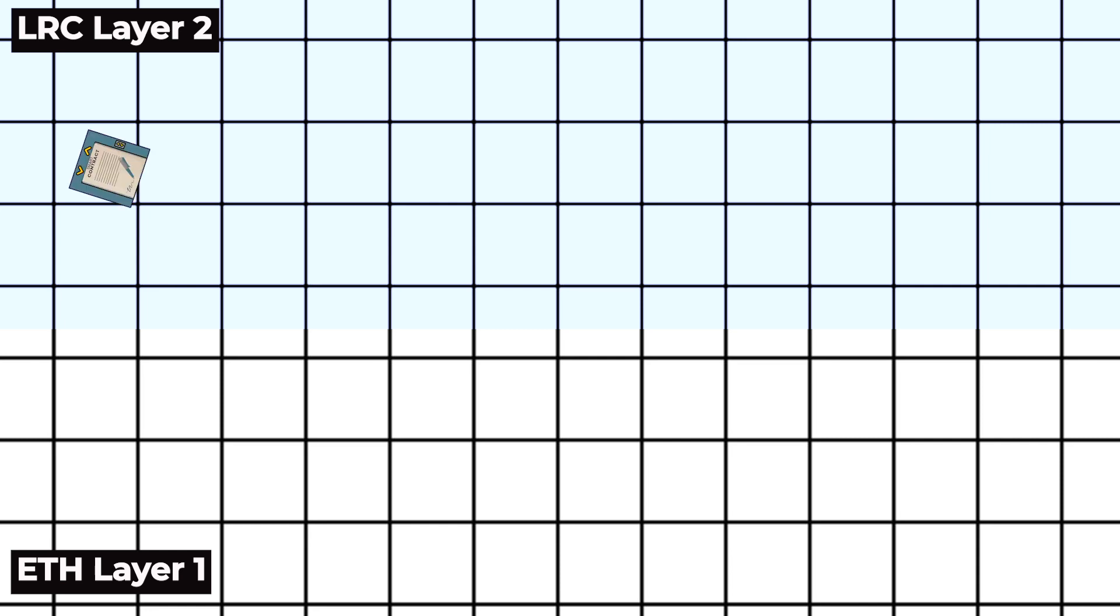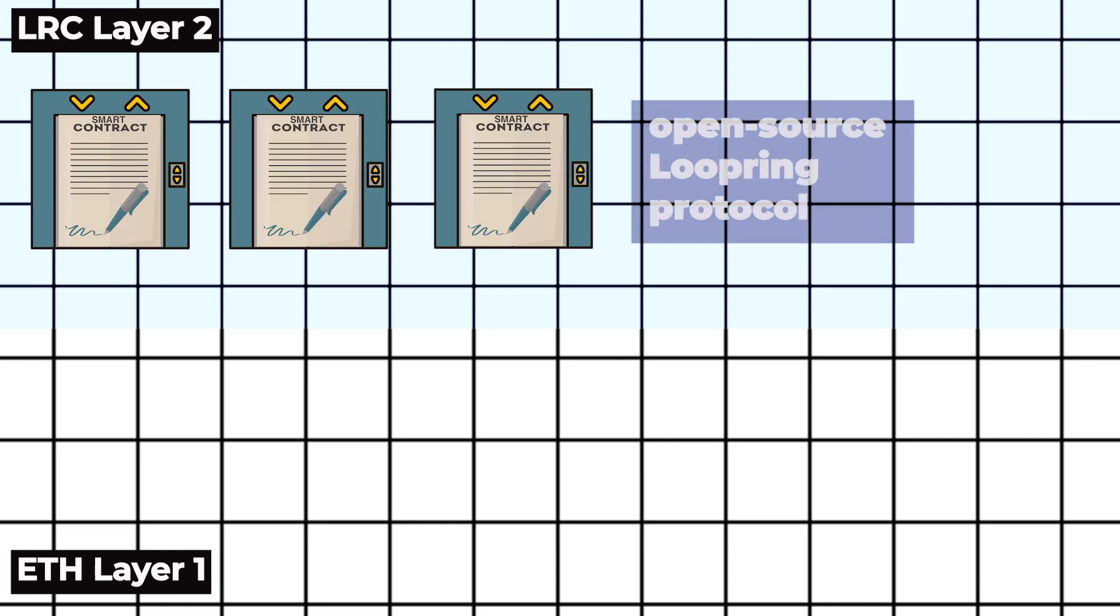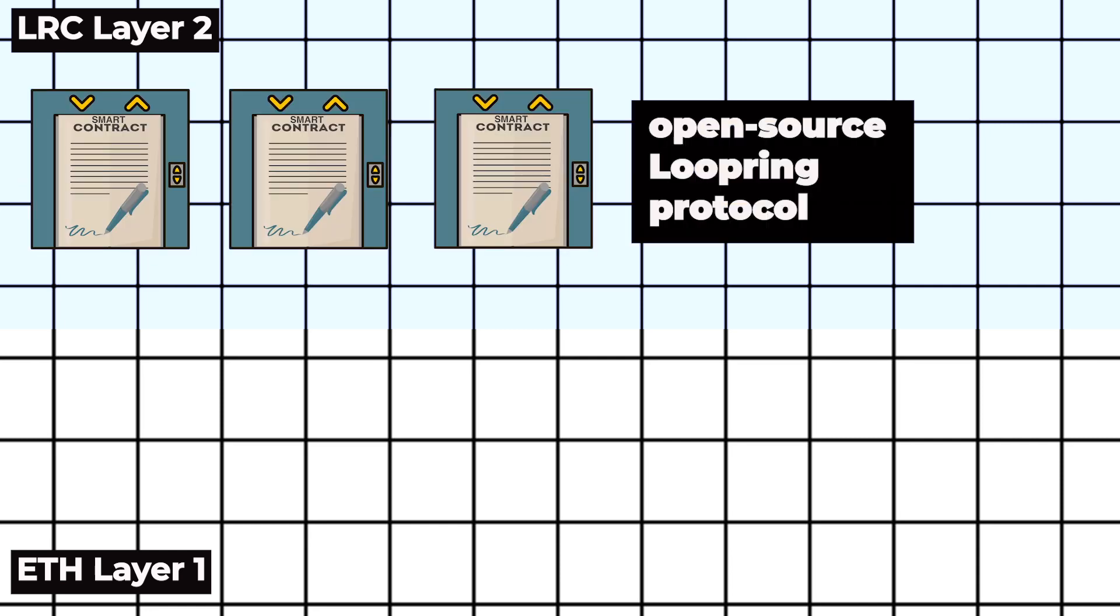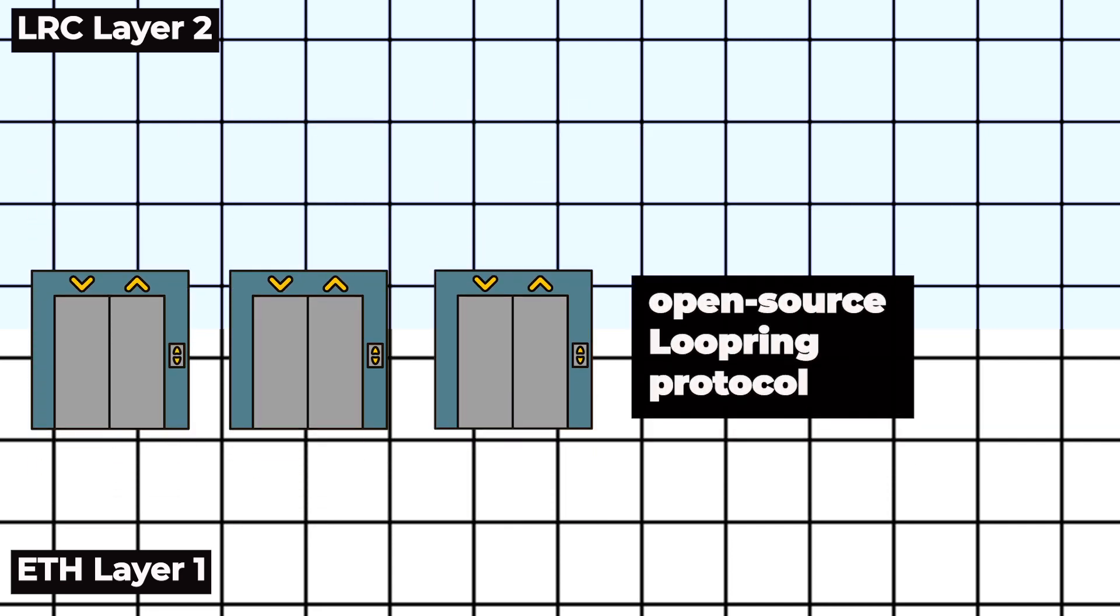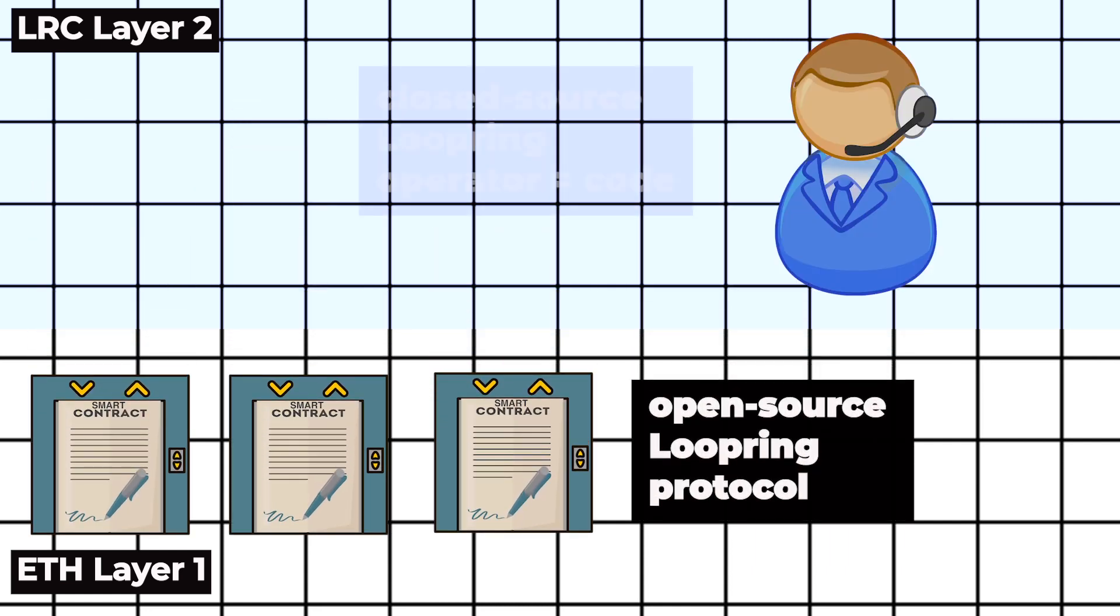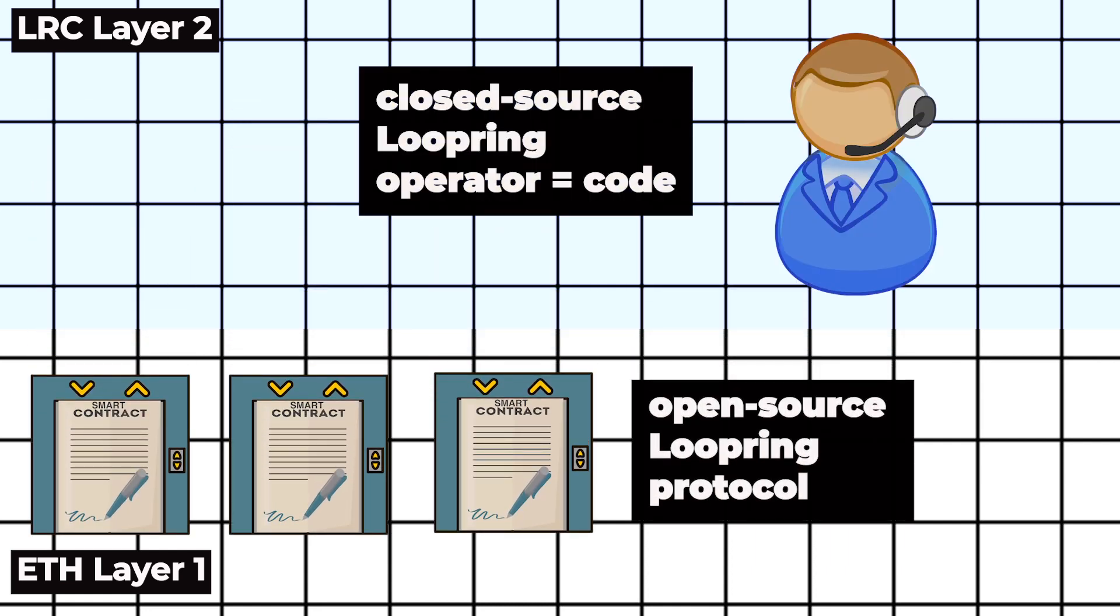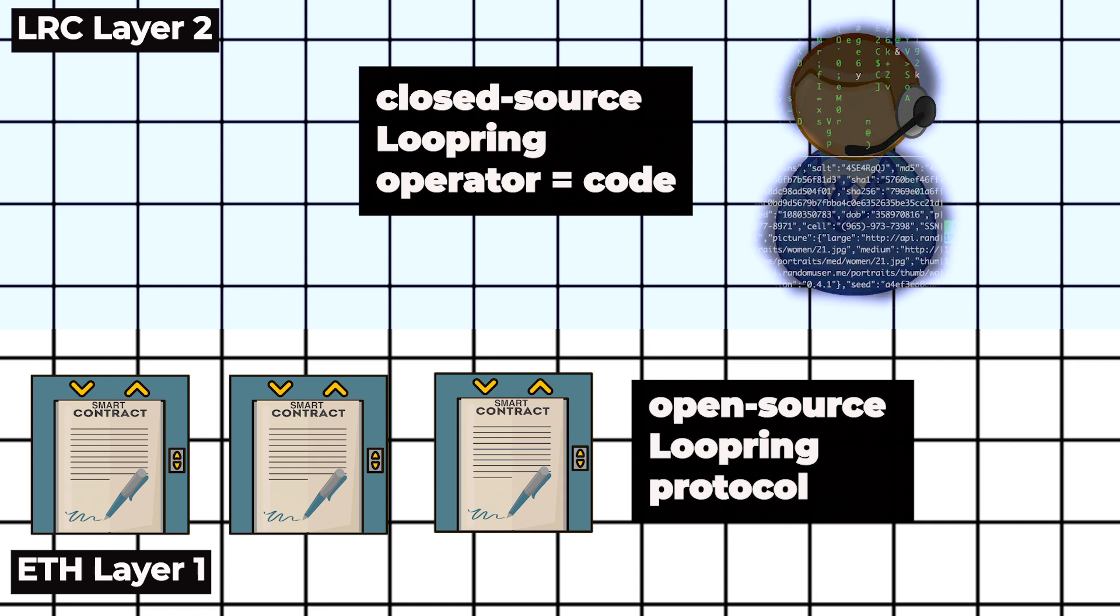The first component is the open-source Loopring protocol, which is a set of smart contracts deployed on Ethereum layer 1. Think of it as a connector between layer 1 and layer 2. The second component is the closed-source Loopring operator. This is code which handles everything on layer 2.